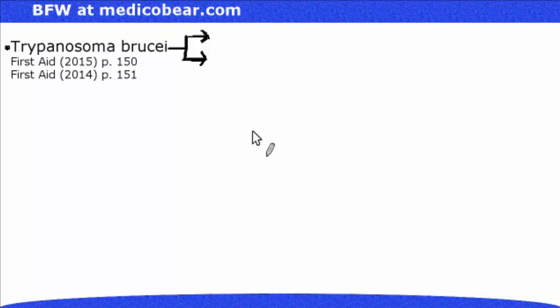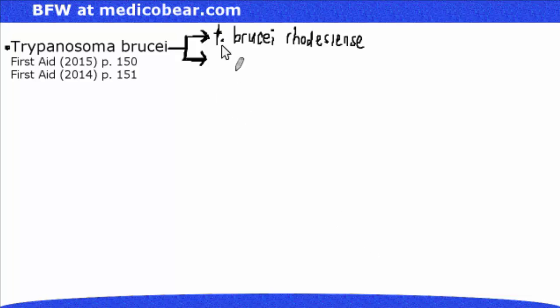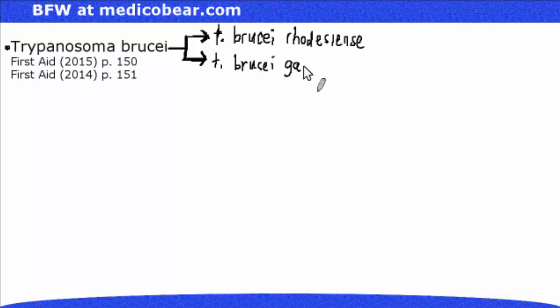There are two subtypes of Trypanosoma brucei that the medical student needs to be aware of. The first one is T. brucei rhodesiense, and the second one is T. brucei gambiense. These are two subspecies of Trypanosoma brucei.